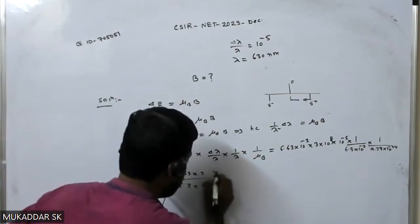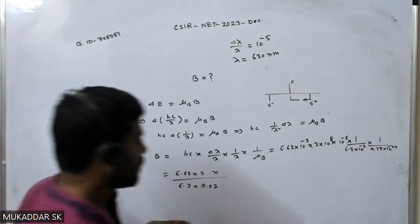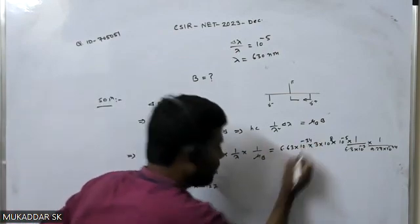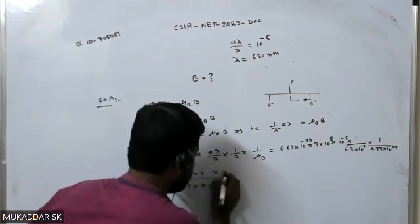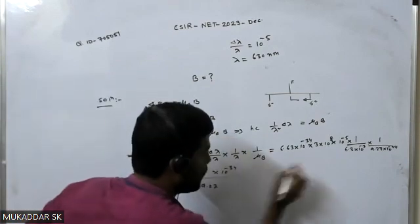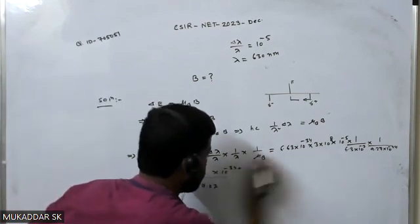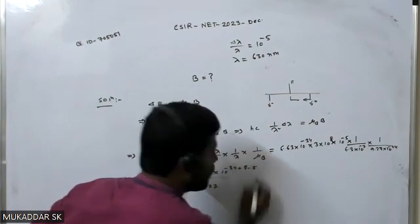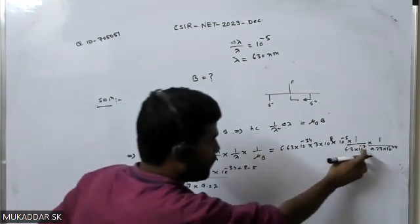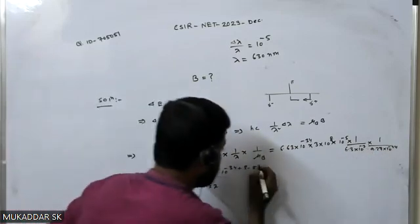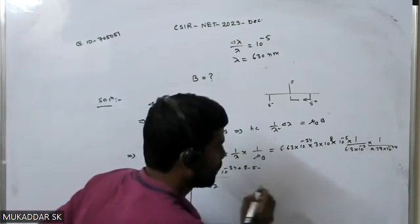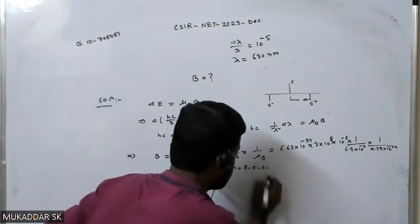So if you rearrange this, so you have 6.63 then this 3 divided by 6.3 and then remaining 9.27. Now I'll collect that power. So you can see you have, well, so this is minus 34. I forgot to write minus 34, so this will be 10 to the power minus 34.